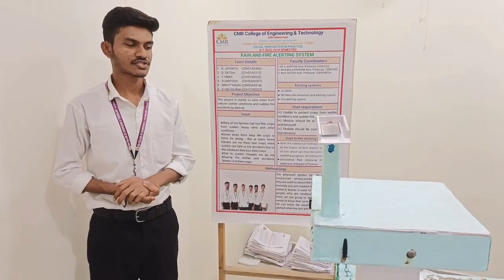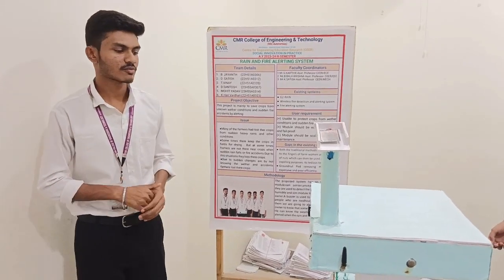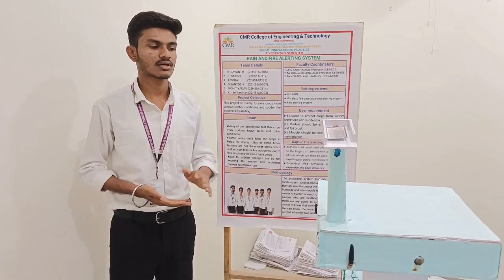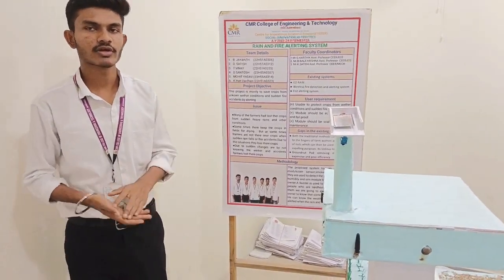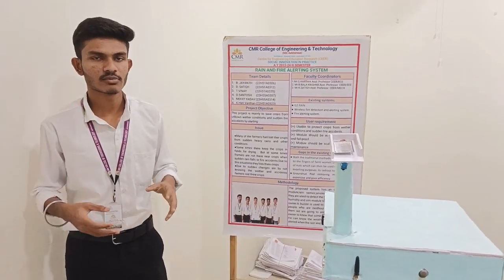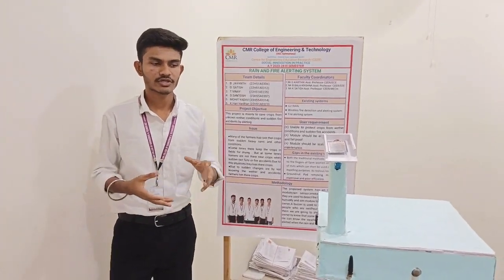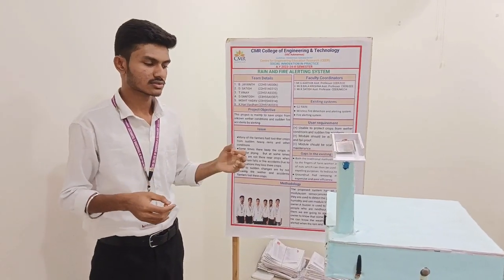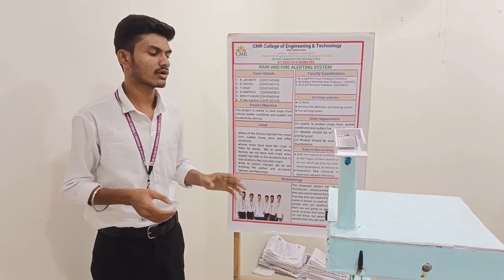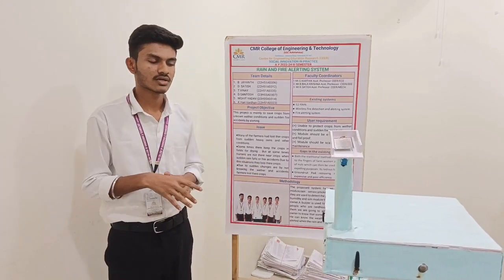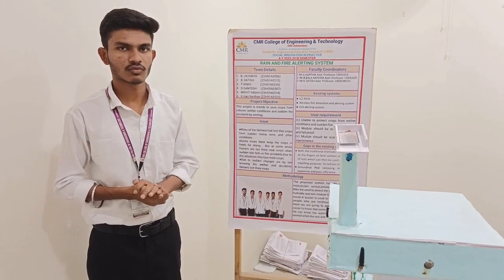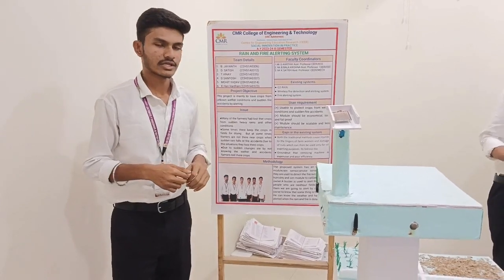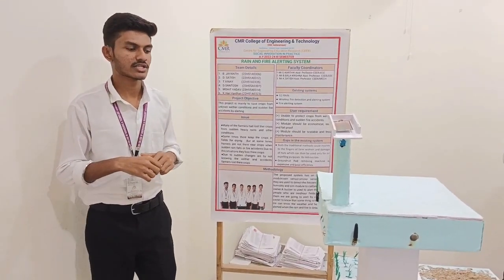The methodology and conceptual design of our project: whenever rain falls, the rain sensor detects it, and the smoke sensor detects smoke whenever farms, fields, or grasses are burned. It detects the smoke and automatically calls the registered owner of the field. The buzzer is used to alert anyone nearby the fields so they may come and help the farmer.